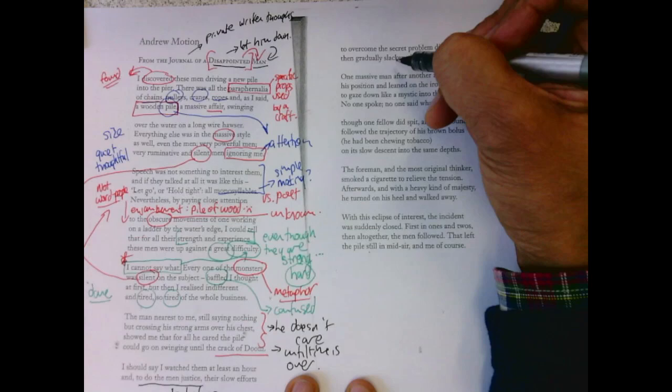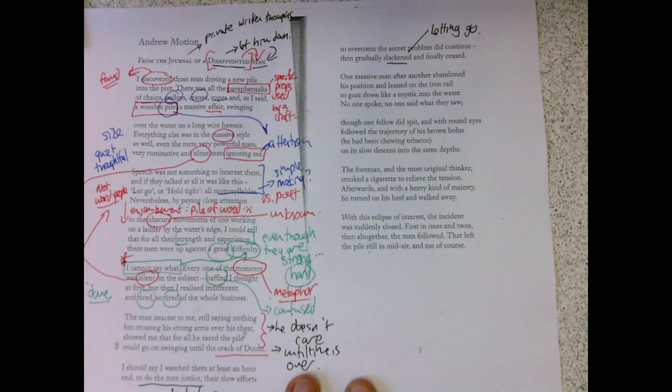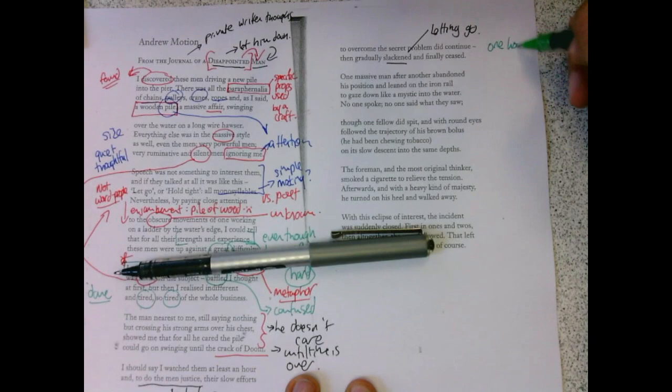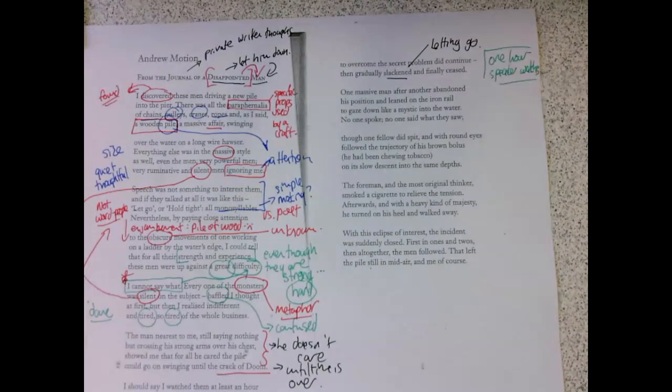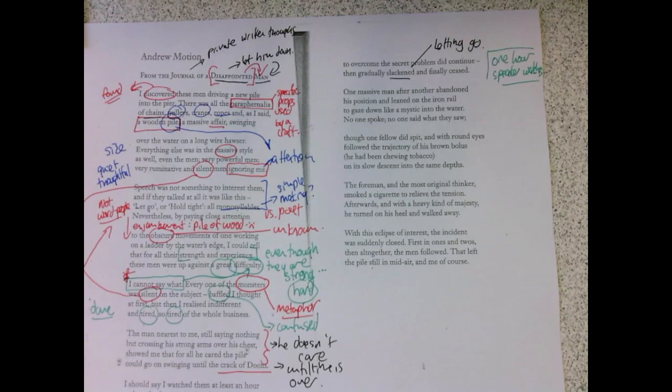So, one massive, and you know what, for one hour, the speaker watches. Why? He's obsessed, he sees his own plight in trying to put a poem together. It's unclear, but there is something about this. He's caught up in it. One massive man after another abandoned his position and leaned on the iron rail to gaze down like a mystic into the river.